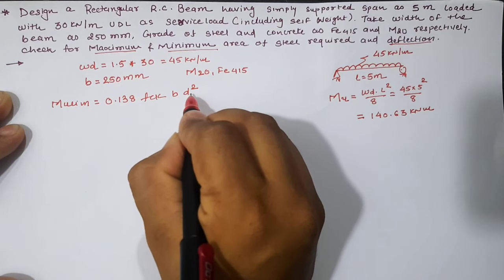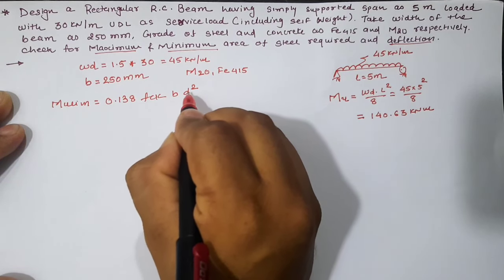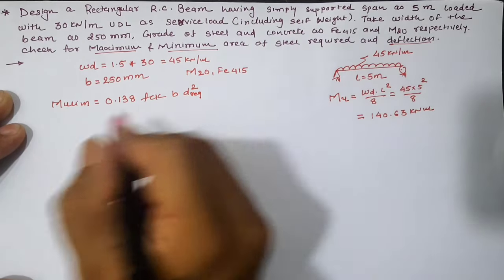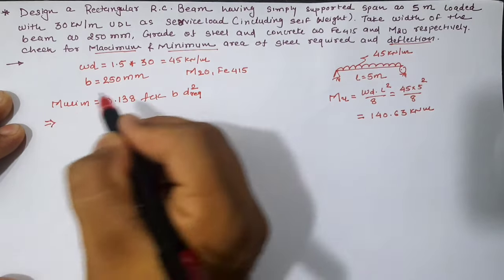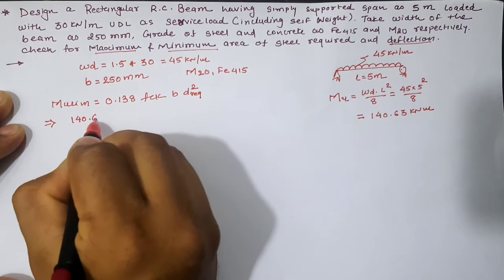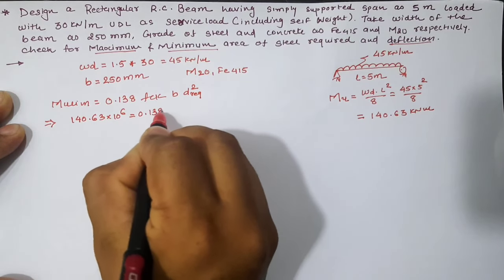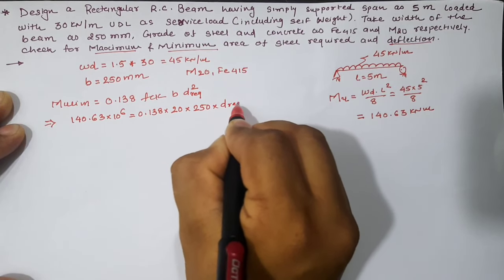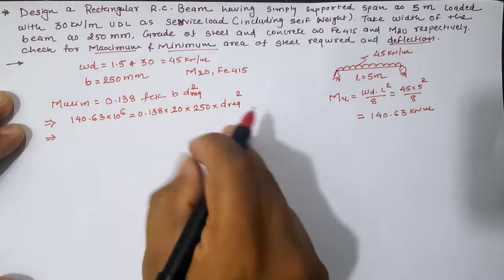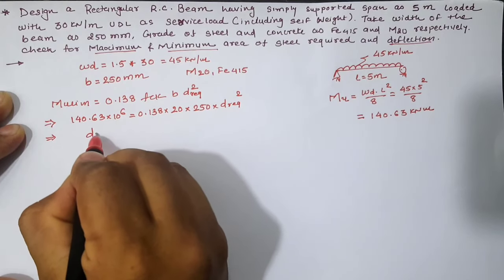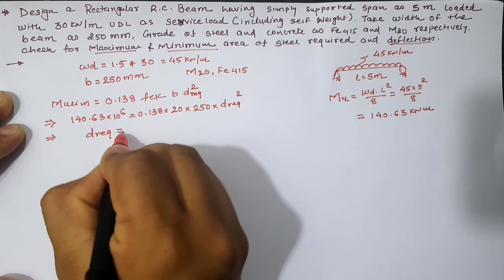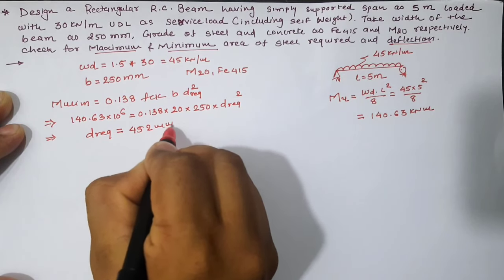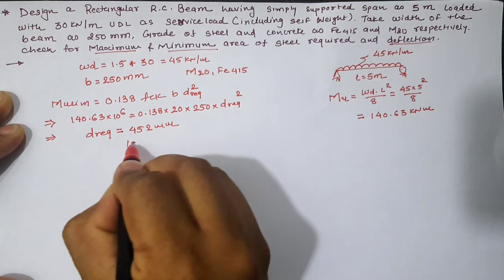According to the limiting moment equation Mu = 0.138 fck b d², now the depth of the beam is not given. Since we don't have the effective depth, we are going to put D required instead of D. Solving this equation, we have D required is equal to 452 mm.